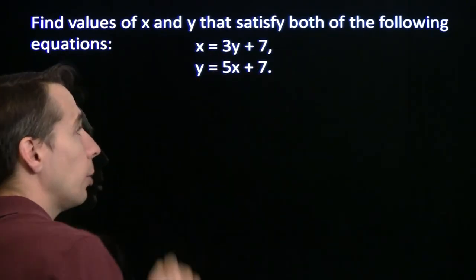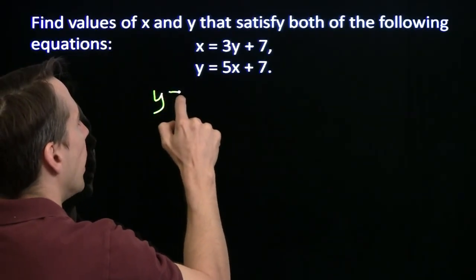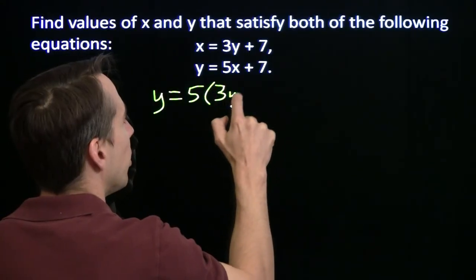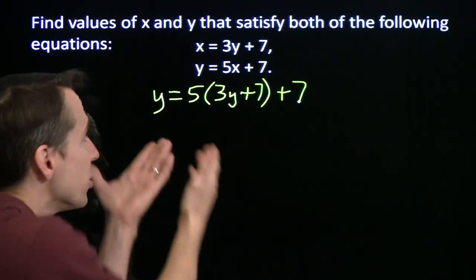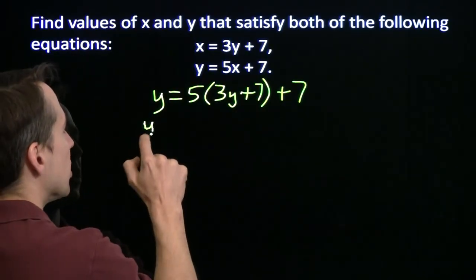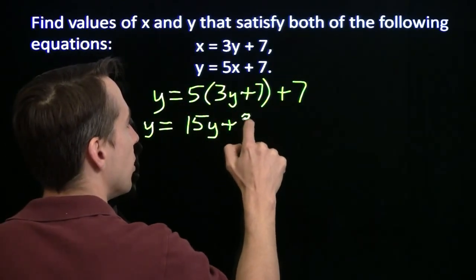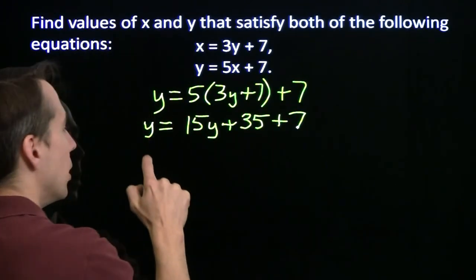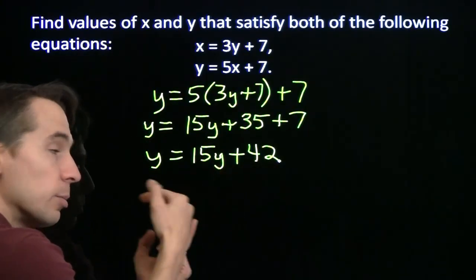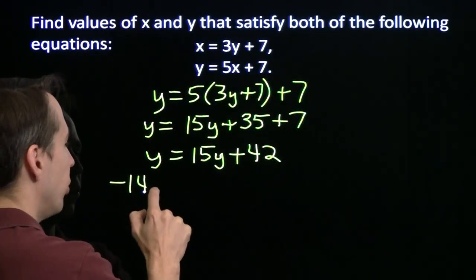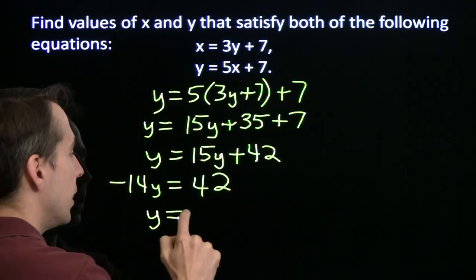We put this expression, 3y plus 7, we're going to substitute that in for x. Just like we would substitute a number in if we knew what number x equaled. And we'll get y is 5 times 3y plus 7 plus 7. And this is an equation we know how to handle. This is just a one-variable linear equation. We expand the product on the right-hand side. We get 5 times 3y is 15y, 5 times 7 is 35, and we have the plus 7. So we get y is 15y plus 42. Subtract the 15y from both sides. We get negative 14y equals 42. So we divide by negative 14 and we get y is negative 3.